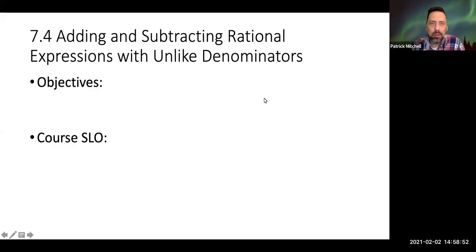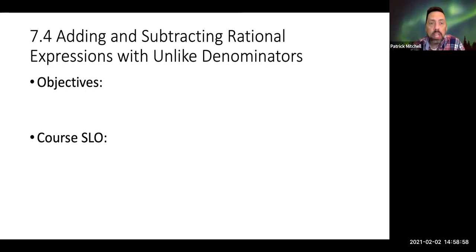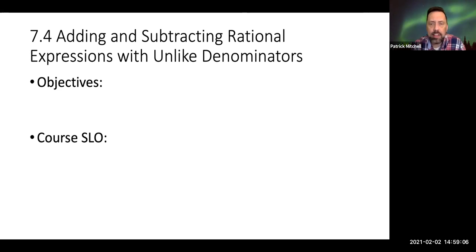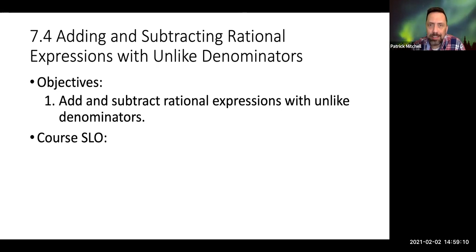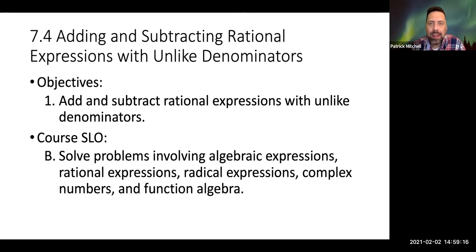Hi everybody, it's Professor Mitchell. We're continuing with Chapter 7, and today we're looking at Section 7.4, which is adding and subtracting rational expressions with unlike denominators. I like to think of this as a continuation of the last section. There is one objective in this section: we're going to add and subtract rational expressions with unlike denominators, and we're still working on the same SLO as we have since the beginning of the chapter.